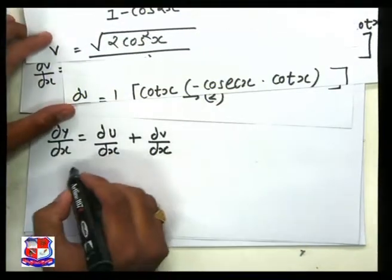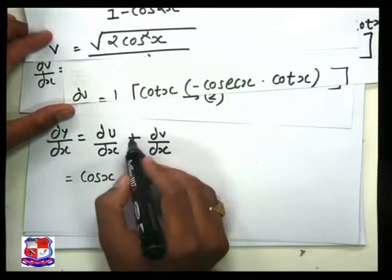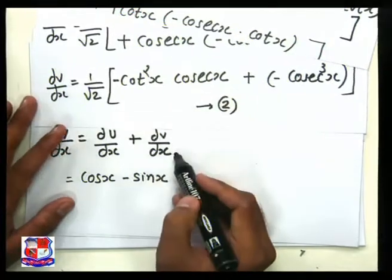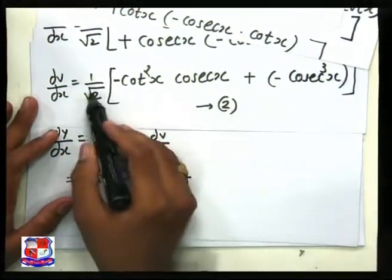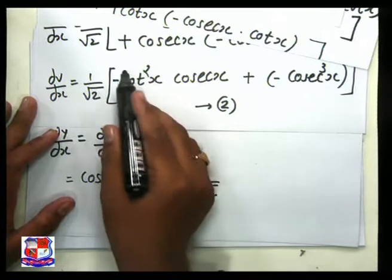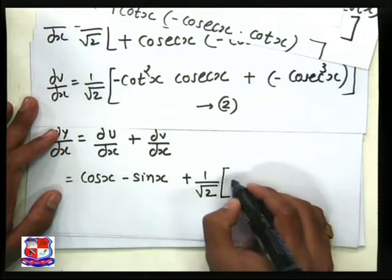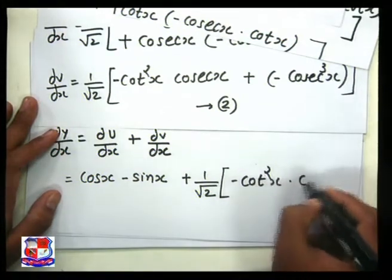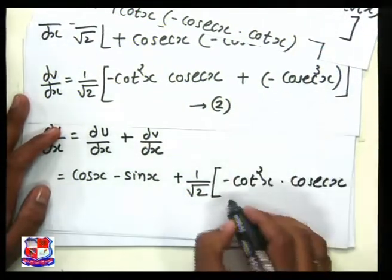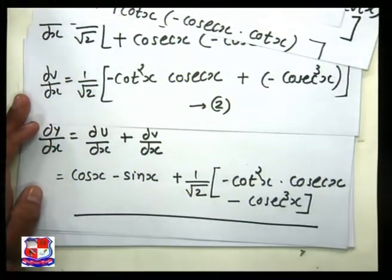So du/dx gives minus cosec x, and then plus the result of dv/dx from equation number 2. Writing the whole term: plus 1 upon √2, and in bracket: minus cot² x into cosec x, minus cosec³ x. This is our final result.